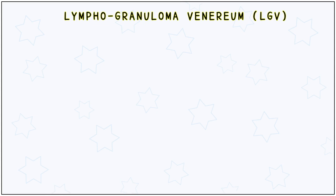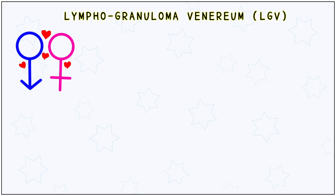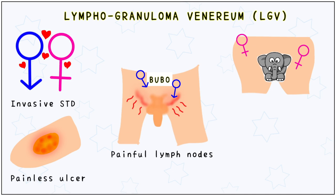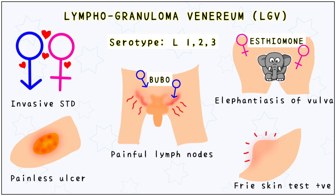Another form of chlamydia is LGV, or lymphogranuloma venereum. It is an invasive STD characterized by painless ulcers and painful lymph nodes. The enlarged inguinal lymph nodes are called bubo, found only in males. In females, esthiomene or elephantiasis of the vulva is seen. The skin gets stretched over these swellings and becomes thin, leading to a positive Frei test. Serotypes L1, L2, and L3 are associated with this form of infection, easy to remember because they also start with L.